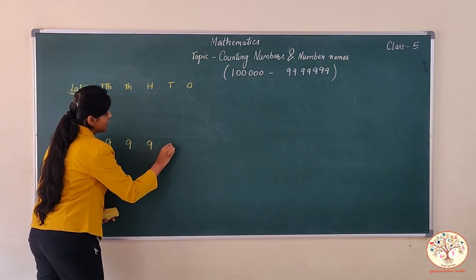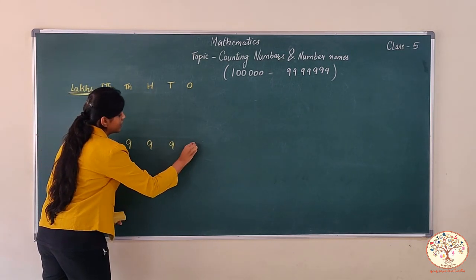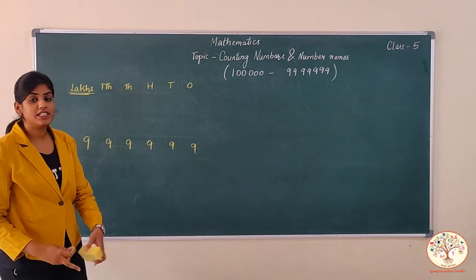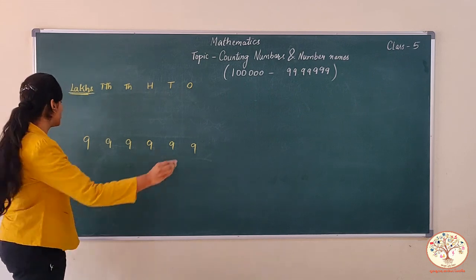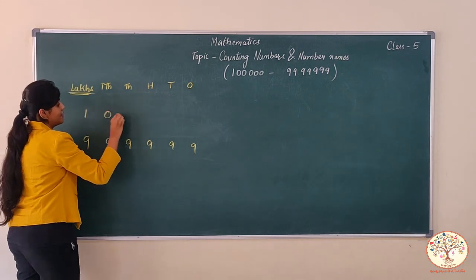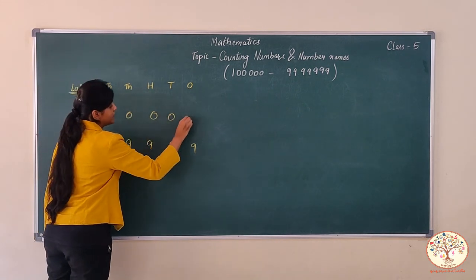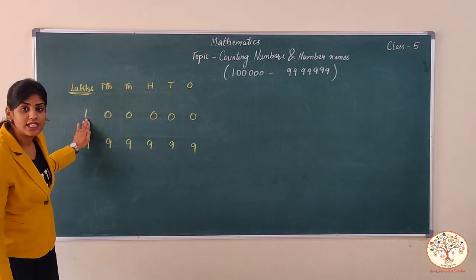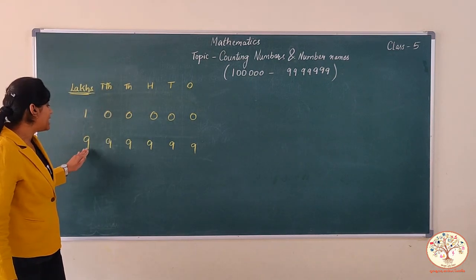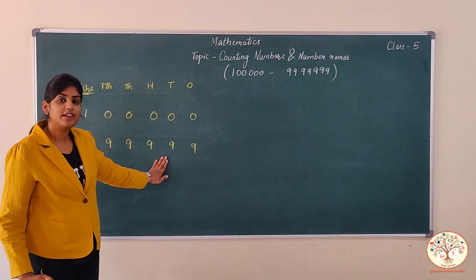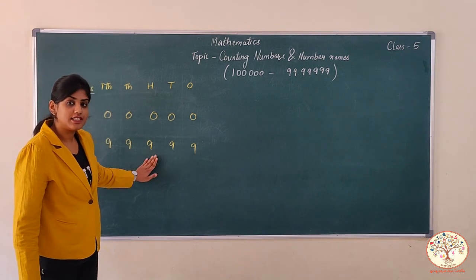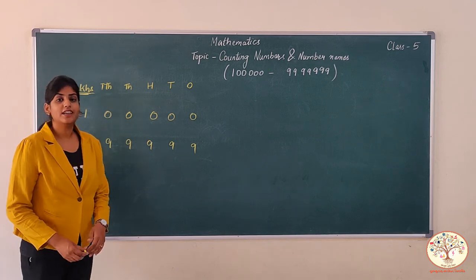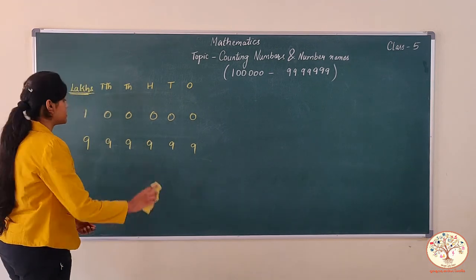The largest five-digit number is ninety-nine thousand nine hundred ninety-nine, so this will be the largest six-digit number. Today we have introduced six-digit numbers: one lakh is the smallest six-digit number, and nine lakh ninety-nine thousand nine hundred ninety-nine is the largest six-digit number. Now let's learn how to write the number name for a six-digit number.